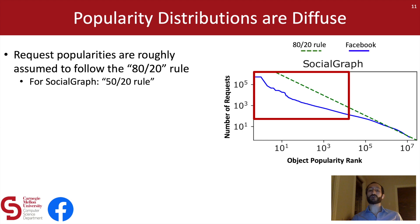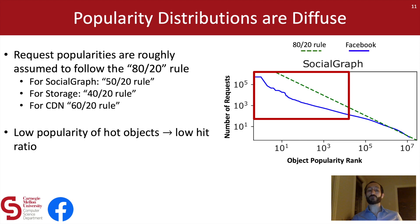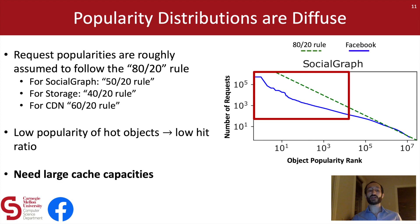In particular, the set of most popular objects is roughly 100 times less popular than what's predicted by the 80-20 rule. In fact, what we actually have for the social graph system is a 50-20 rule. This is really bad for caching because if I put that same 20% of most popular objects in my cache, now I only get a 50% hit ratio. We see this replicated across systems — the storage system follows more of a 40-20 rule and the CDN system follows something like a 60-20 rule. In general, the low popularity of hot objects leads to low hit ratios for a given cache size, meaning all of these systems require large cache capacities to achieve acceptable hit ratios.